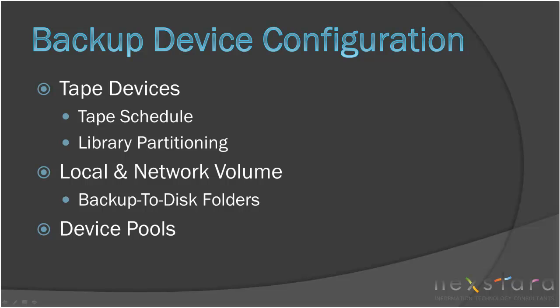If there are several layers of backup hardware within your design, Backup Exec enables you to configure device pools. Device pools allow you to associate and prioritize sets of backup devices so that when the jobs are executed, they will run on the most appropriate device available. One example of a device pool implementation would involve using a tape drive as a primary device, but failing over to a backup-to-disk folder in the event that no tape is available.